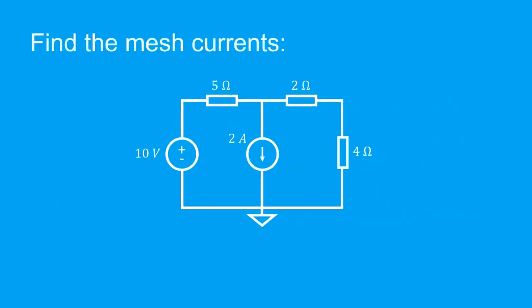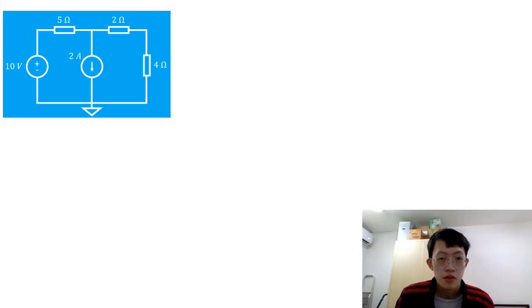So let's try out this example. In this problem, we're asked to find each of the mesh currents. And in fact, this circuit is no different from the last video, except I just swapped around the positions of this current source with this resistor.